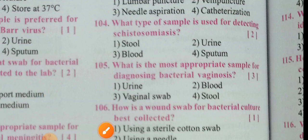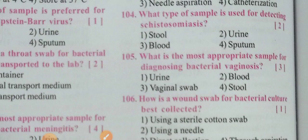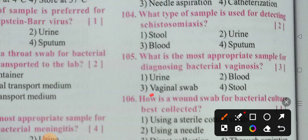Next: What is the most appropriate sample for diagnosing bacterial vaginosis? Options include vaginal swab, urine, blood, and stool. Since this involves a vaginal bacterial infection, the answer is clearly vaginal swab. Option three — vaginal swab — is the correct answer.